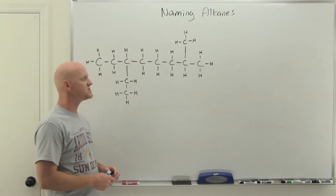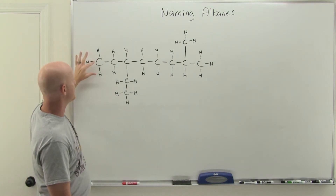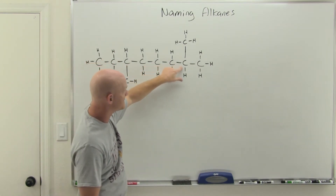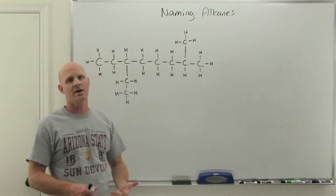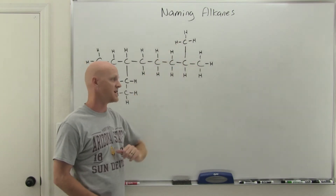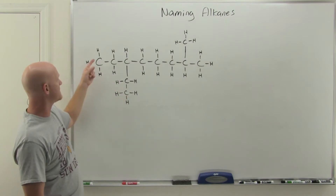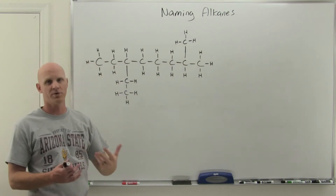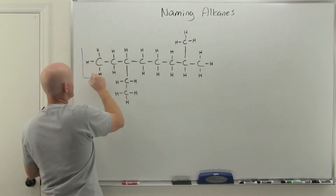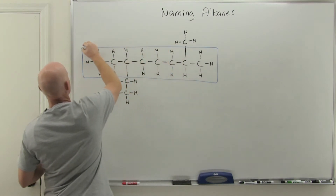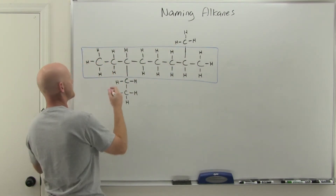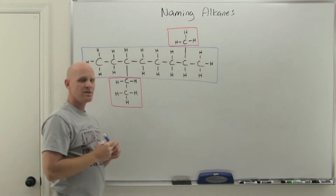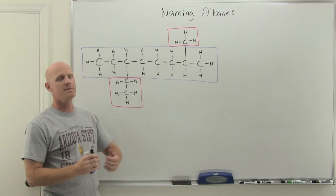To find the longest continuous chain of carbon atoms: starting from the left end you can go one, two, three, four, five — but you can also go one, two, three, four, five, six, seven, and whether you go up or off to the right to get eight, it doesn't matter. Either one of those groups could be part of that longest chain. So I want to divide this up into the parent chain and then the other branches coming off it, which are your substituents.